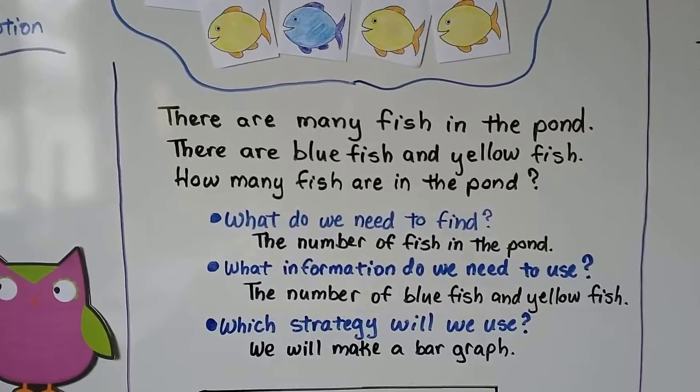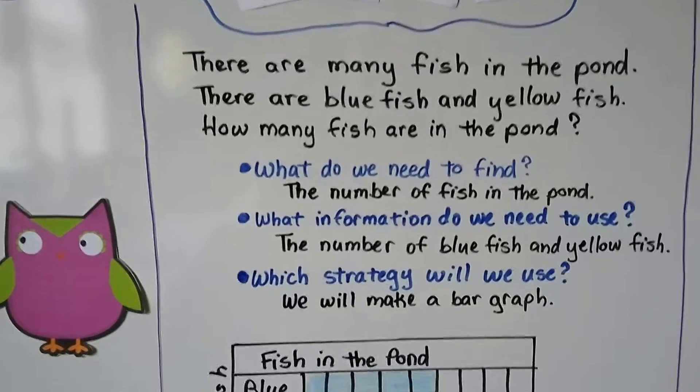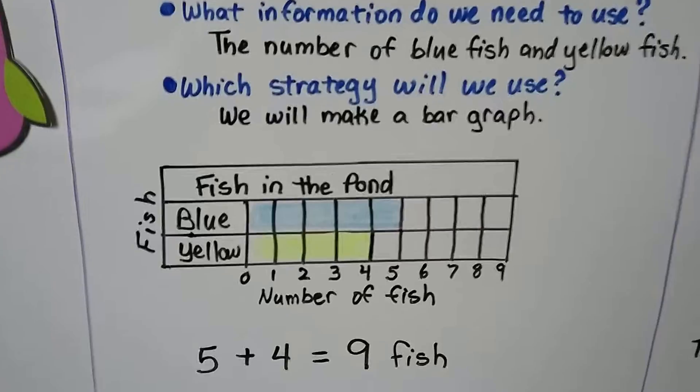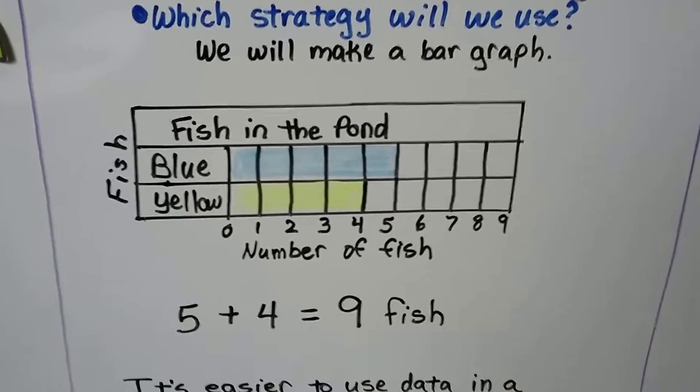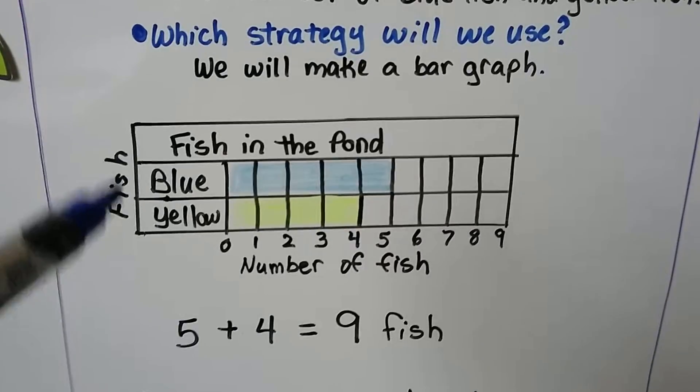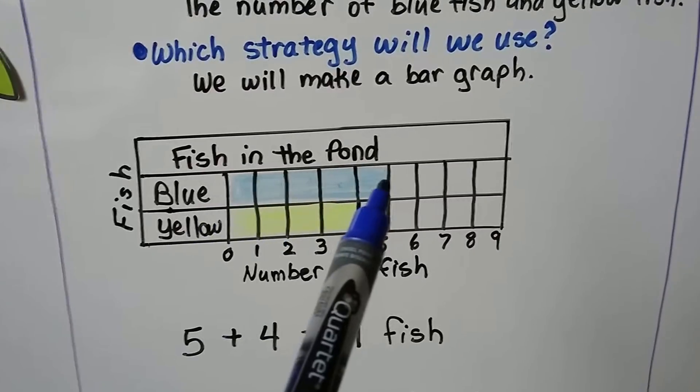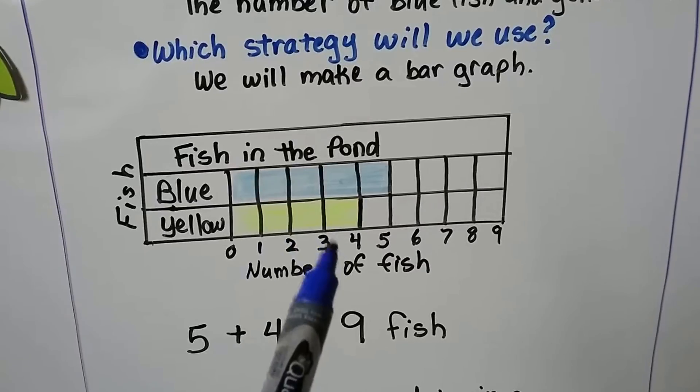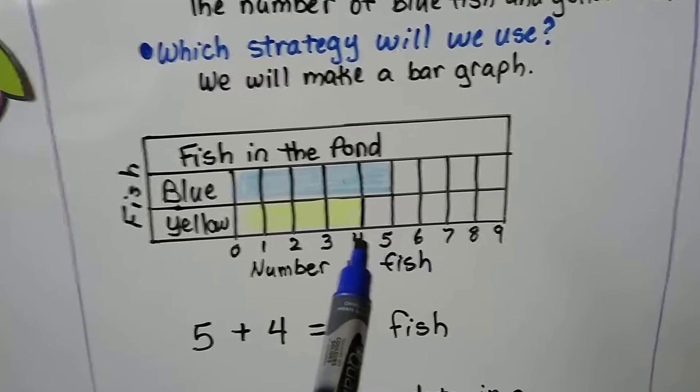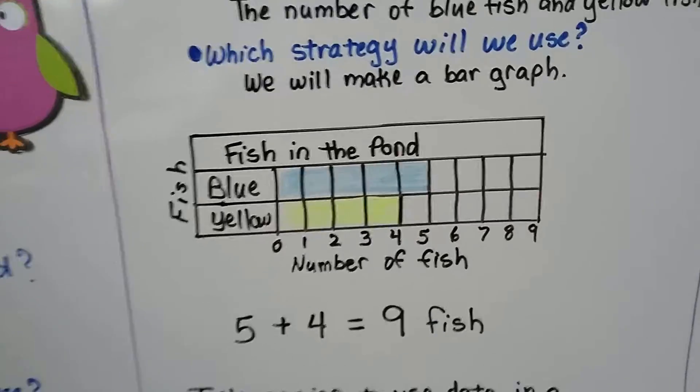And which strategy will we use? Well, for this video, we're going to make a bar graph. And yes, we could just count them, but this is a lesson about representing data and bar graphs. So we have a bar graph of fish in the pond. The title of the bar graph is fish in the pond. We can see the labels for the fish, blue and yellow. And we can see that there's a bar for the blue fish and a bar for the yellow fish. The blue fish total five and the yellow fish total four on our scale. That's our scale of the number of fish.